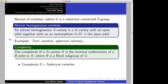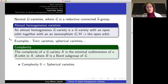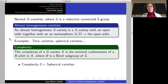I have a question — when you are talking about complexities, is that over k-bar? Yes, k-bar. Everything here is over k-bar. So complexity 0 means that b has an open orbit, and that is the definition of a spherical variety: a g-variety where a Borel subgroup has an open orbit. But there are other examples of almost homogeneous spaces of higher complexity.